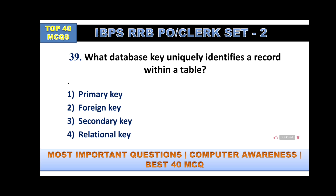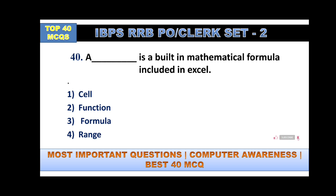Which database key uniquely identifies a record? The answer is the primary key. For example, in an attendance sheet, a teacher identifies a student uniquely by roll number, so roll number is used as a primary key. In Excel, a built-in mathematical formula is called a function — answer is function. Thanks for watching.